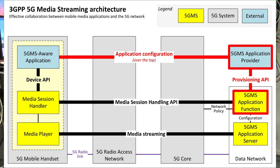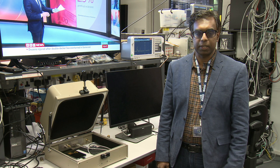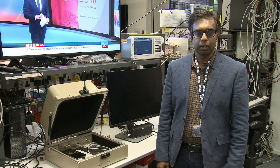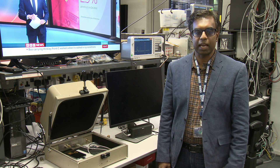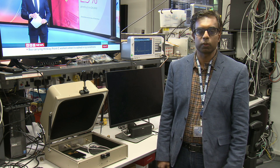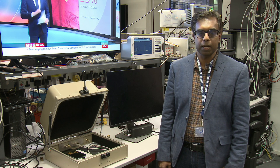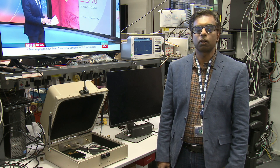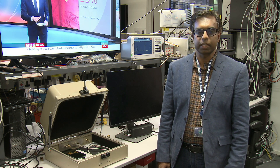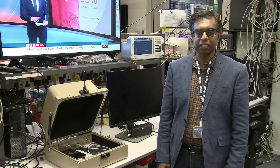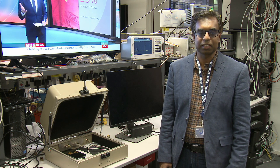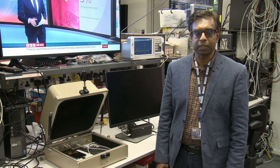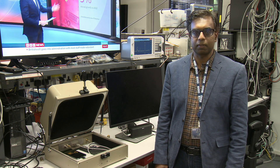The application provider can pass the service access information privately to the 5G MS aware application. This includes a media entry point URL pointing to a DASH MPD. In our demonstration, we simply pass this service access information to the VLC media player running on a mobile handset to kick off media streaming, and this causes it to retrieve the DASH MPD through the 5G MS application server.